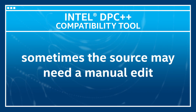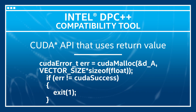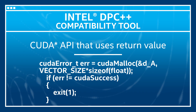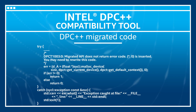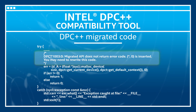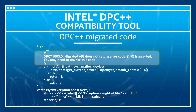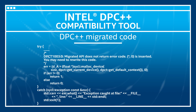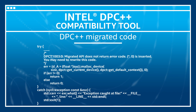Sometimes the generated DPC++ source needs a manual edit. For example, CUDA API uses return value to indicate errors while SYCL uses try-catch exception style. For this kind of migration, the Intel DPC++ compatibility tool adds comments in the generated code to indicate that some manual edit is needed. Keep in mind that the tool is being improved, so you might see some differences in the migrated code with the latest releases.